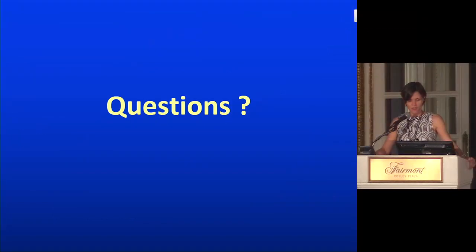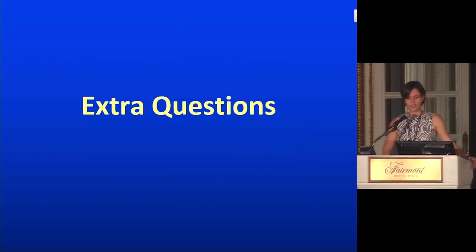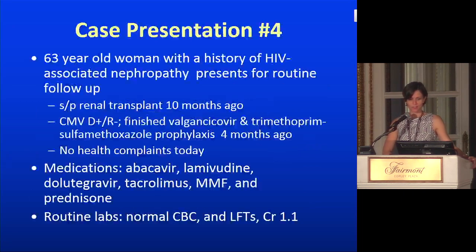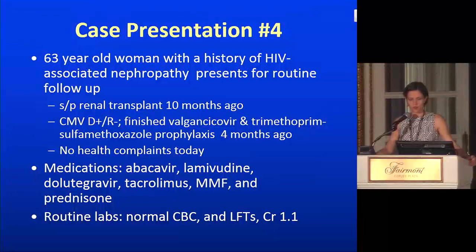Bonus question. A 63-year-old woman with a history of HIV-associated nephropathy presents for routine follow-up. Her renal transplant was 10 months ago. She's CMV D+ R- and finished valganciclovir and trimethoprim-sulfamethoxazole prophylaxis about four months ago. She has no health complaints. Her medications include abacavir, lamivudine, dolutegravir, tacrolimus, mycophenolate, and prednisone. Her routine labs are normal.